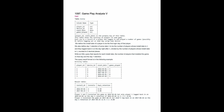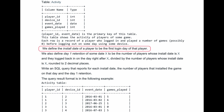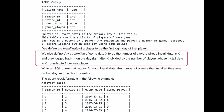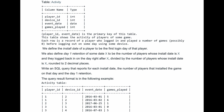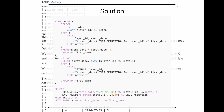The fifth question is on the same table. We define the install date of a player to be the first login date of that player. We also define day one retention of some date X to be the number of players whose install date is X and they log back in on the day right after X, divided by the number of players whose install date is X, rounded to two decimal places. It asks you to write a SQL query that reports for each install date the number of players that installed the game on that day and the day one retention. For this question, we might need to create some subqueries in order to solve it. Here's one possible solution. You can see the increase in level of difficulty from the first question to the fifth — these are the kinds of questions you could expect in a real SQL interview.